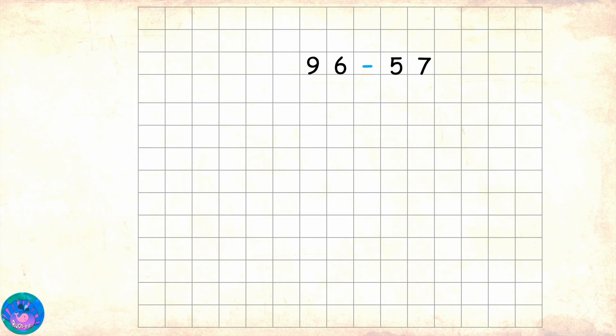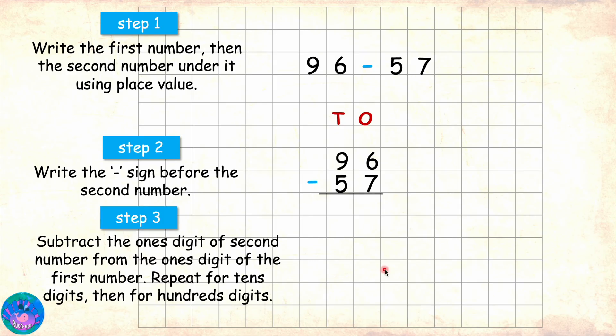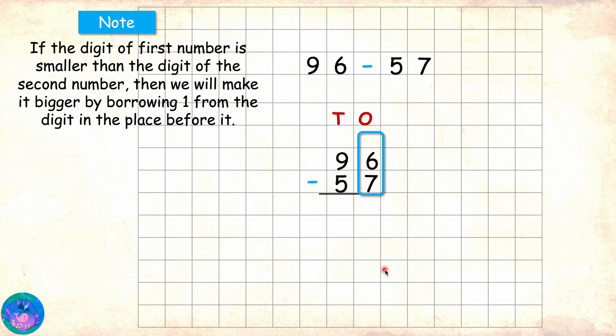Suppose we have to solve 96 minus 57. So we write the two numbers according to place value, write the minus sign and mark the area for answers, and then as always we start from the ones place. Here we have 6 minus 7 but 6 is less than 7. Now, if the digit of the first number is smaller than the digit of the second number, then we will make it bigger by borrowing 1 from the digit in the place before it.